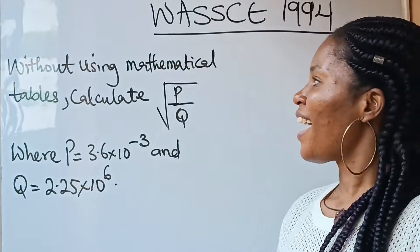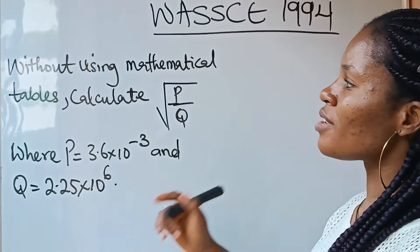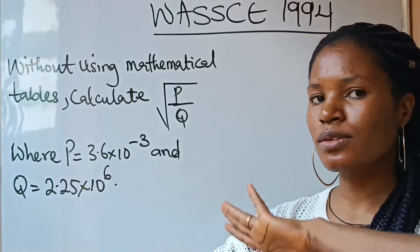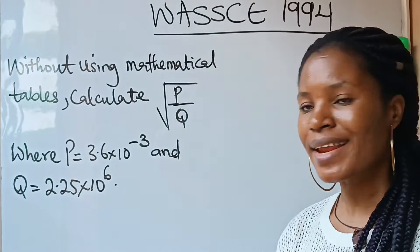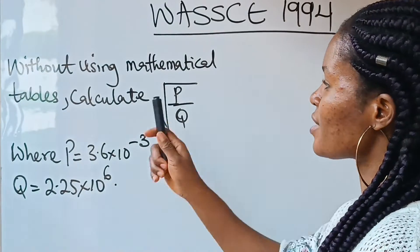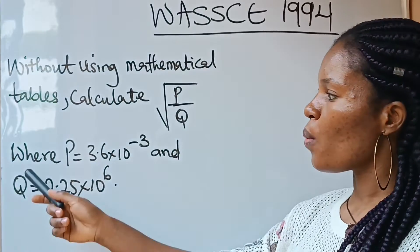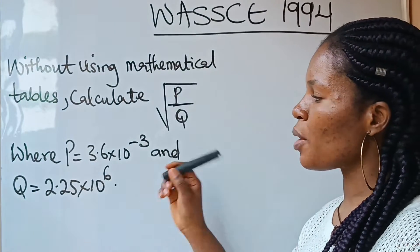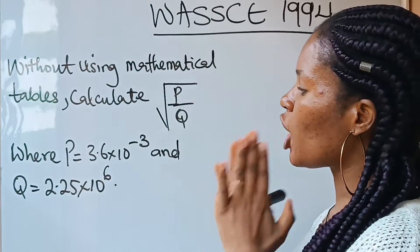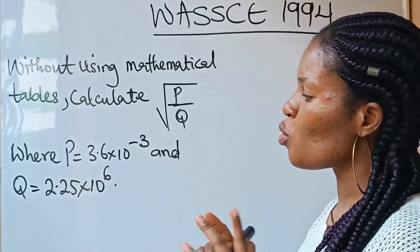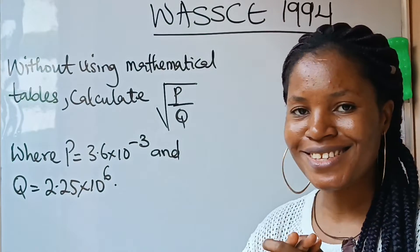Welcome back to my channel. Today we are asked to solve without using mathematical tables — that means you are not supposed to use your calculator or anything. We are asked to calculate the square root of P over Q, where P is 3.6 times 10 raised to the power of minus 3, and Q is equal to 2.25 times 10 raised to the power of 6.